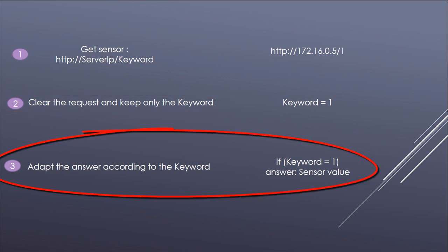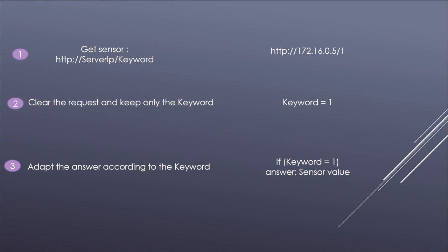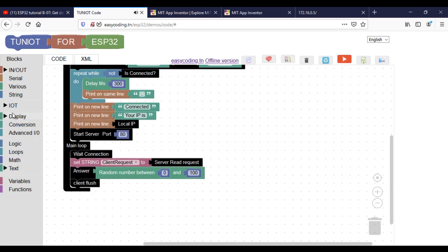In the end, we will make an if statement: if the keyword is equal to 1, we will answer with the value of sensor 1. If it is 2, we will answer with the value of sensor 2, and so on.